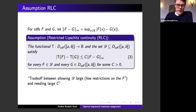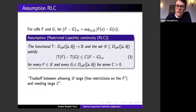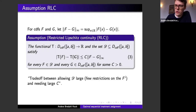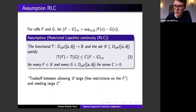We need one assumption: restricted Lipschitz continuity of the functional. For some CDF F in the class D, compare the functional value at F to the value at some general CDF G — typically the empirical CDF. We require that if F and G are close to each other, then the values of the functional are also close. In other words, if the empirical CDF approximates the population CDF F well, then I can also estimate the value of the functional well.